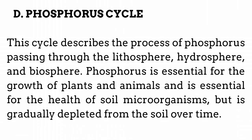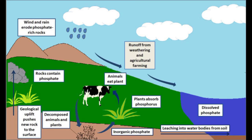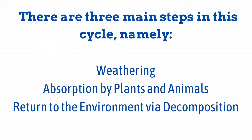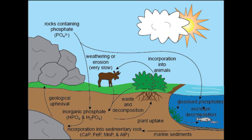Phosphorus cycle. This cycle describes the process of phosphorus passing through the lithosphere, hydrosphere, and biosphere. Phosphorus is essential for the growth of plants and animals and is essential for the health of soil microorganisms, but is gradually depleted from the soil over time. There are three main steps in this cycle: 1. Weathering. 2. Absorption by plants and animals. 3. Return to the environment via decomposition.